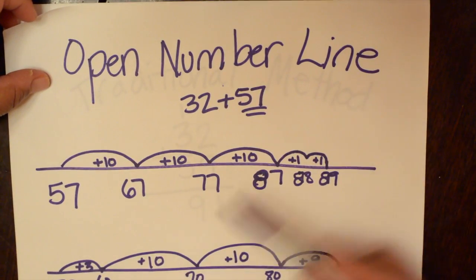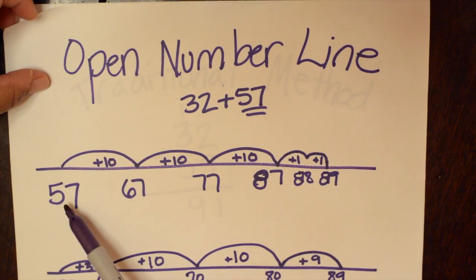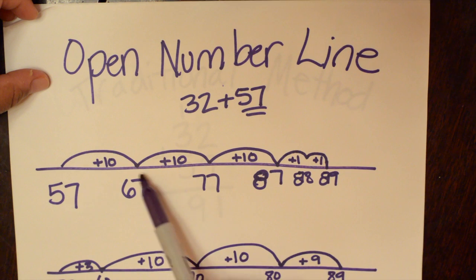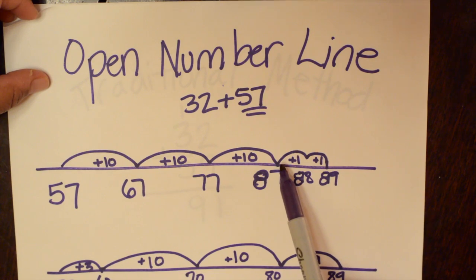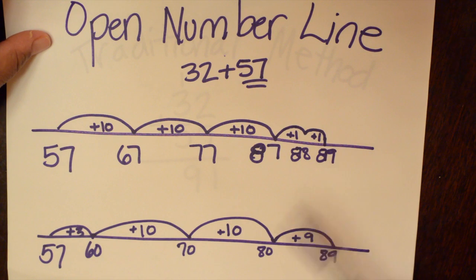Another way is the open number line. And so we have 32 plus 57. I tell the kids to start with the highest number, so they'll start with 57. They'll jump 10 and get 67, jump 10 more and get 77, jump 10 more and get 87, and then they still have two more to jump. And so they jump 87, 88, 89.